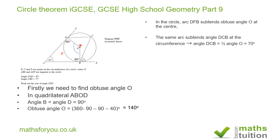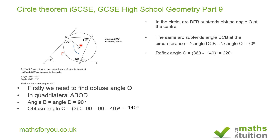We now need to work out the size of the reflex angle at the center. We know that angle O is 140 degrees, and the sum of the angles at a point is 360 degrees. It then follows that the reflex angle O is going to be 360 minus 140 degrees, and the answer is 220 degrees.